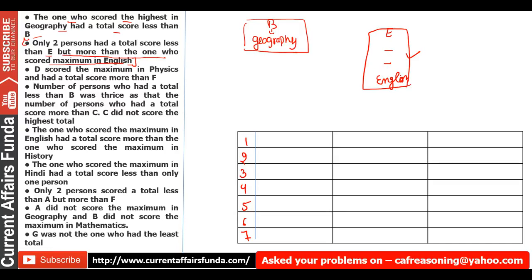Next clue: D scored the maximum in Physics and had a total score more than F. D ka jo score hai woh physics mein zyada hai, and total score jo hai woh F se zyada hai — meaning F's rank will be below D.